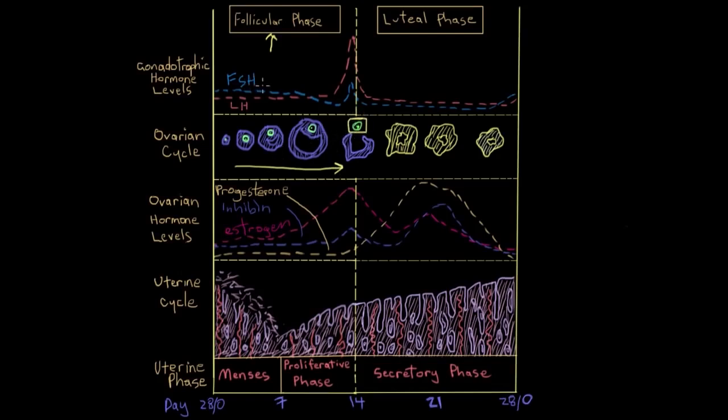This stimulation of the follicles comes from the release of various hormones - FSH, LH, estrogen, and so on. The second half after ovulation is called the luteal phase. It's called the luteal phase because it's about the development of this yellow structure here called the corpus luteum.